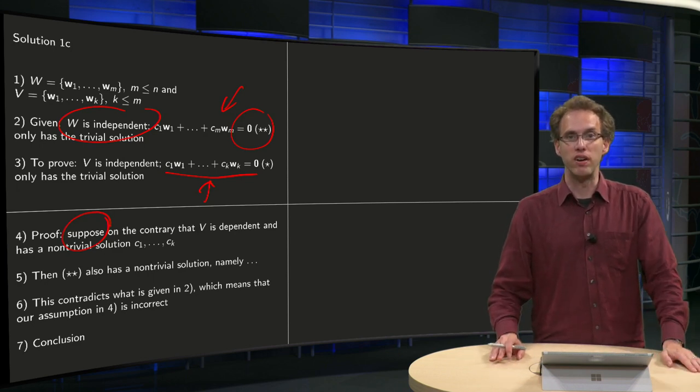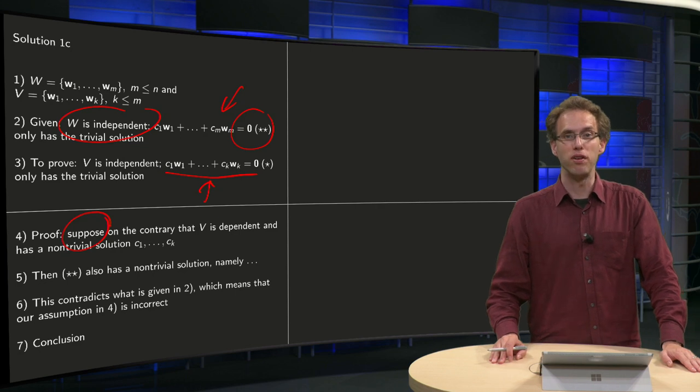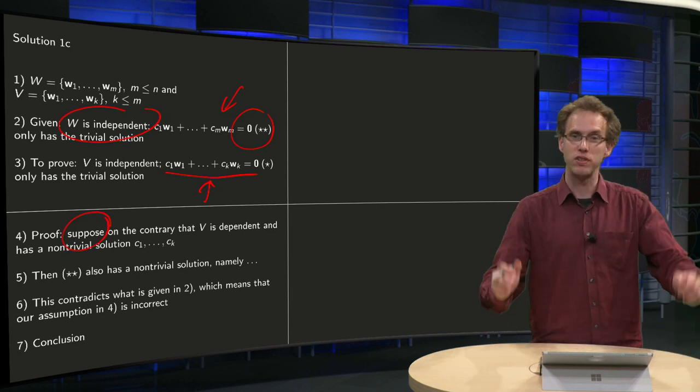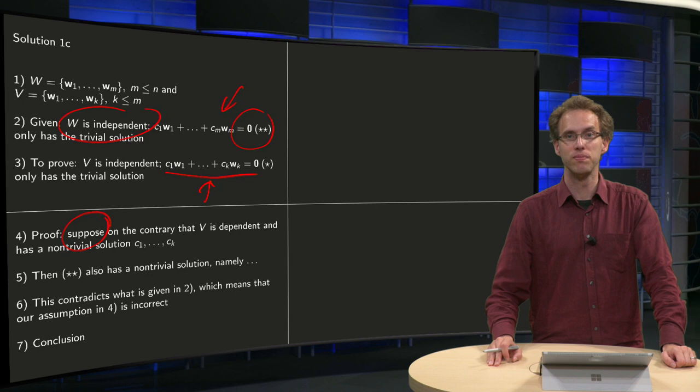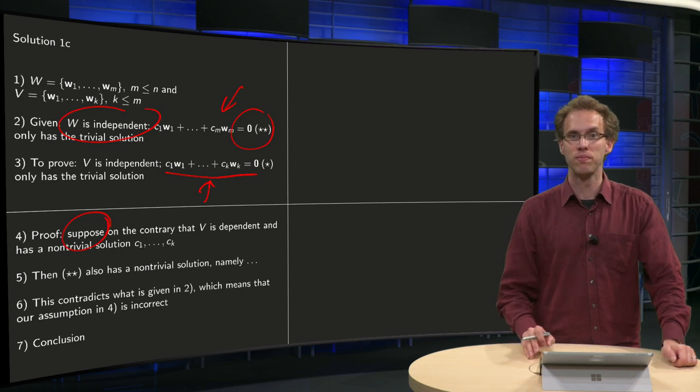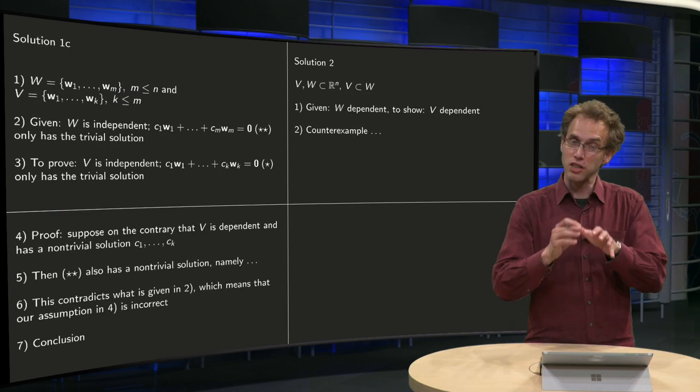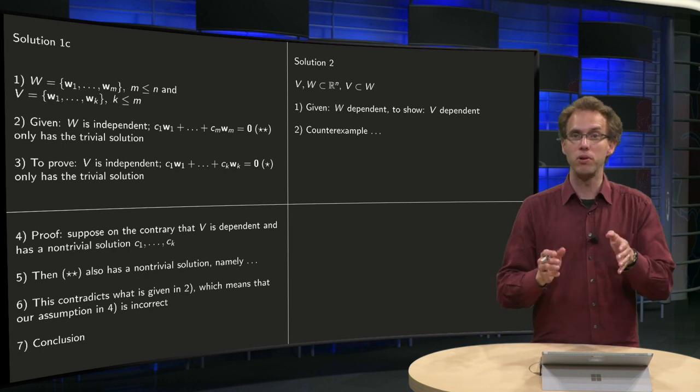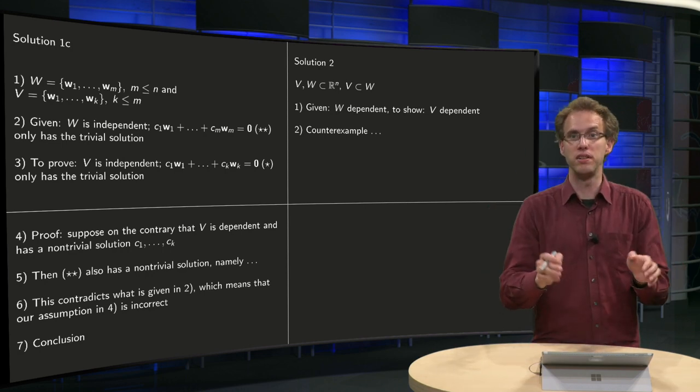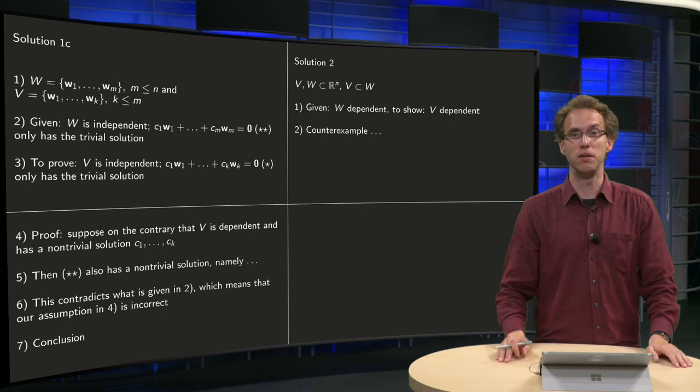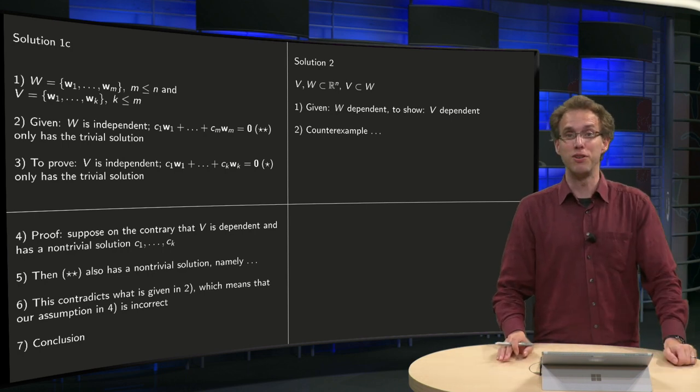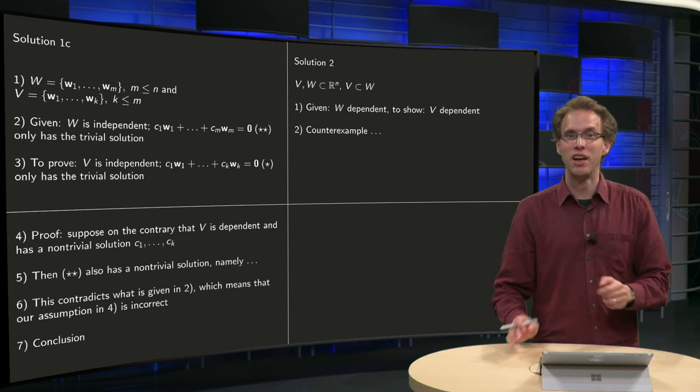Now, question, is this proof now fully correct, starting with the definitions? Yes, now we are done, we are nicely using the definitions and concluding that if the big set is independent, then also the smaller set is independent, which hopefully coincides with your intuition. Now the other one,